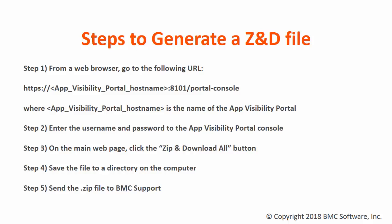Step 2: Enter the username and password to the app visibility portal console. Step 3: On the main web page, click the zip and download all button. Step 4: Save the file to a directory on the computer. And Step 5: Send the zip file to BMC support.